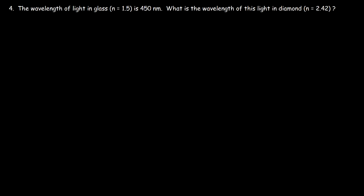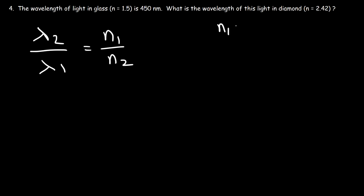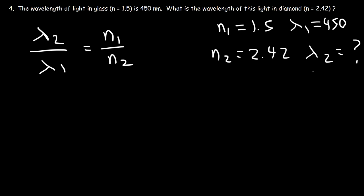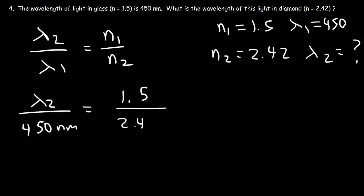Number 4: the wavelength of light in glass is 450 nanometers. What is the wavelength of this light in diamond? The formula we need is lambda 2 divided by lambda 1 equals n1 over n2. Let's say n1 is 1.5 for glass, and the corresponding wavelength is 450 nanometers. n2 for diamond is 2.42, and we're looking for the wavelength in diamond. Since diamond has a higher index of refraction than glass, the wavelength should be lower — less than 450 nanometers.